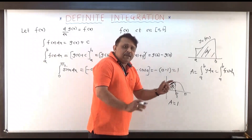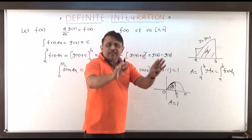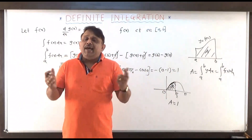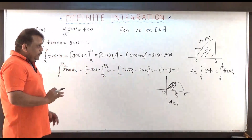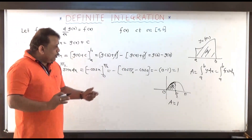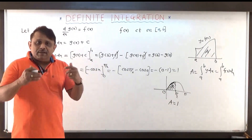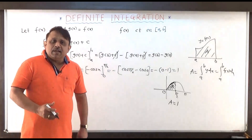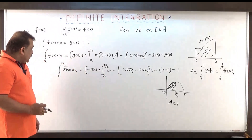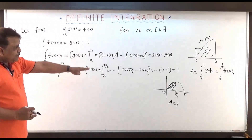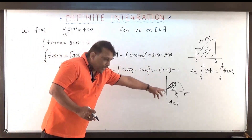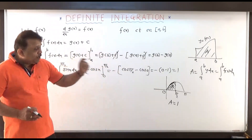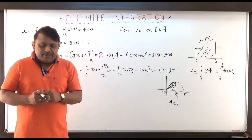If you are getting this number negative, then we can put a modulus sign and we will get the positive area. That kind of discussion we will do in the next lecture. So the integral from 0 to pi by 2 of sin x dx equals 1, which represents the area shown in the shaded figure.